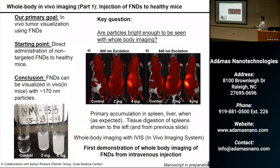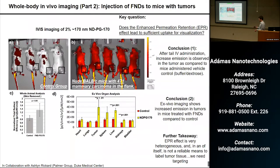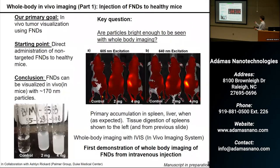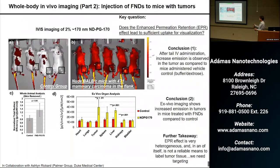So the conclusion is that yes, we can see the diamond particles in vivo with whole body imaging. These mice did not have tumors yet, so the next step was to introduce tumors into the mice. Since we want to target tumors, we first wanted to explore a non-targeted approach before using specific targeting.